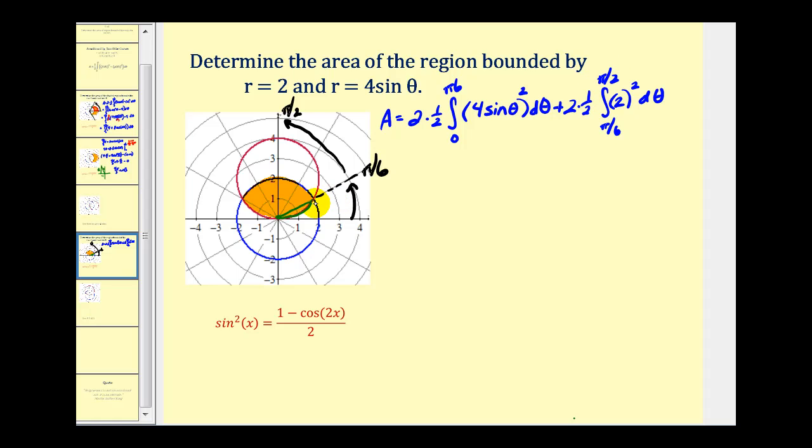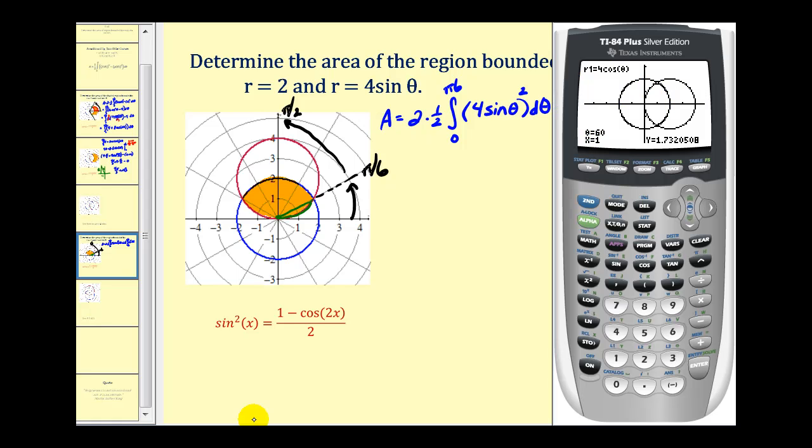Now we could find these limits of integration algebraically, but I think it's nice to verify them with the graphing calculator. So let's go ahead and do that. Let's press the mode key and make sure that we're in degree and polar mode. Let's also check our window to make sure that we have theta from zero to 360, and our theta step by 1.5. Now let's go ahead and enter the two polar equations. We have four sine theta, and we have r equals two. Let's go ahead and press zoom and then option four for z decimal.